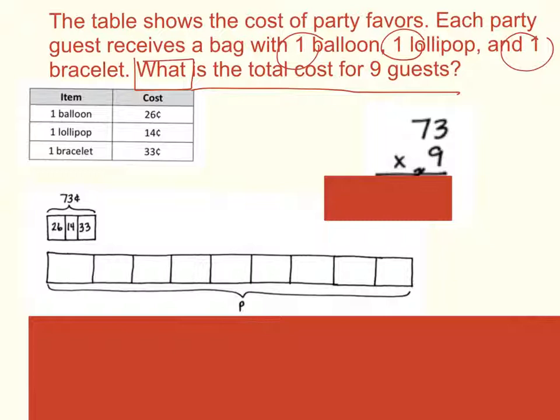We'll solve this problem using the standard algorithm. Start out in our ones column. Nine times three ones would be 27. Remember, you cannot put two digits in the ones place, so we carry the two to the tens place, and we put the seven in the ones place.